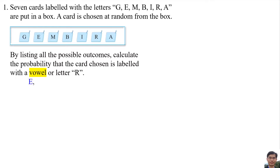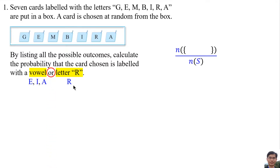The vowels in the letters are E, I, and A. There is only one letter R. Combining both gives 4 possible outcomes. So the probability is 4 over 7 — 7 because there are 7 letters, and 4 because there are 4 possible outcomes.